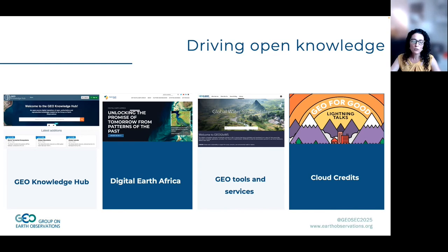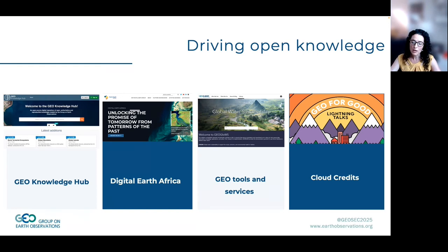We are pushing for access to cloud technologies by working through big technology companies who provide credits to enable open data analysis. We've been working with AWS, Google, and Microsoft, granting 70 or so projects cloud credits and cash with Microsoft, with a focus on low and middle income countries. Because these programs are being coordinated under the umbrella of GEO, we expect that the results will be made open.